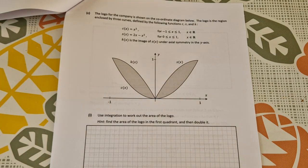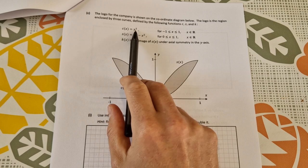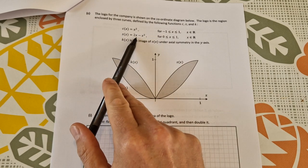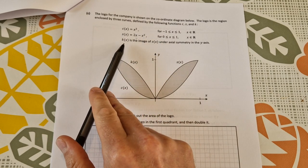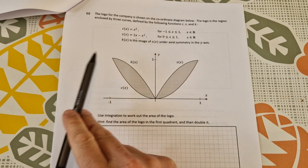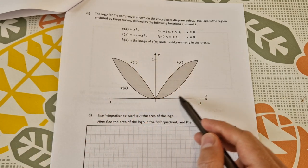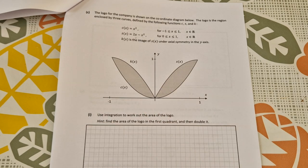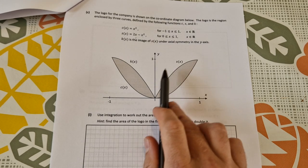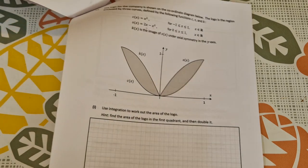The next part, Part C of the final question: the logo for the company is shown on the coordinate diagram below. The logo is the region enclosed by three curves defined as follows: c(x) equals x squared, s(x) is 2x minus x squared, and k(x) is the image of s(x) under axial symmetry. Use integration to work out the area of the logo. It gives you a nice hint there: find the area of the logo in the first quadrant and then double it.